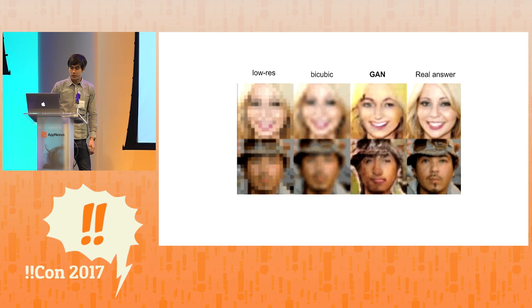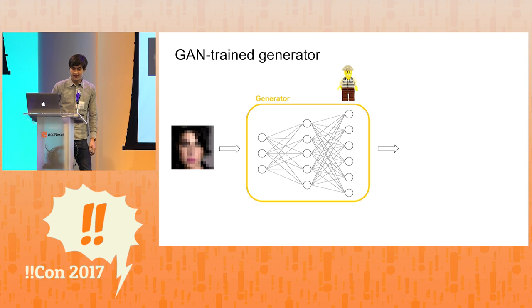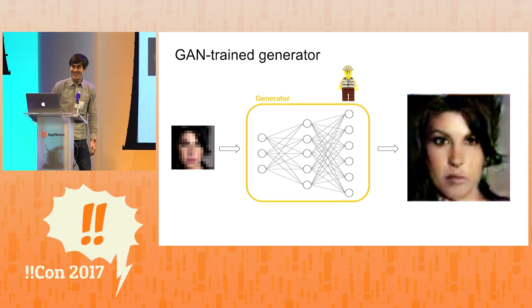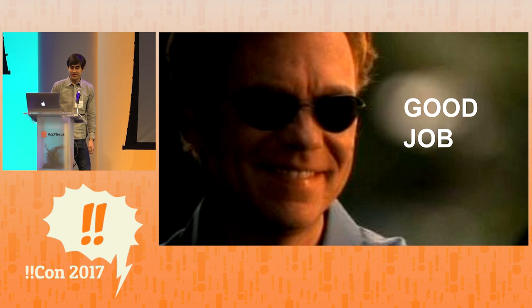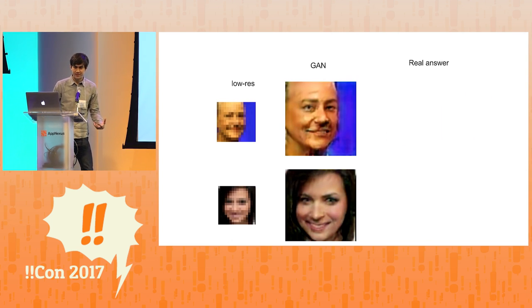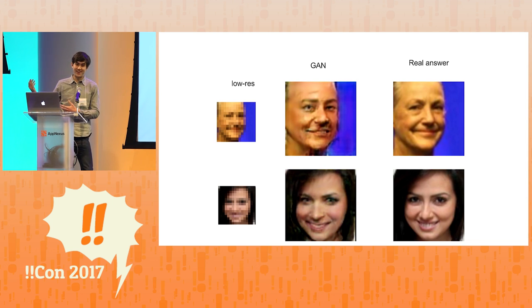So we set that up and train for a while. You can see as we're training the results are getting better and better — they start out looking pretty weird, but as we go they start getting sharper and converging on something that looks pretty realistic. Now let's see how it works. We just pull out our generator network, which has been trained in the GAN structure — and isn't that pretty cool? We've kind of imagined this face just out of these pixels. If you compare it to the original result from the earlier neural network, it's way better. Boss is happy. We can see what this looks like with a couple other faces, and it produces results that look pretty realistic. But if you look at what the original high-res image actually was, you can see that it doesn't quite match up — the information needed to reconstruct the face isn't actually in the image, so we're just kind of making it up.